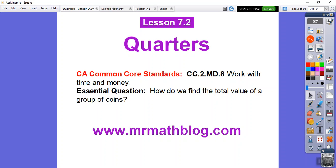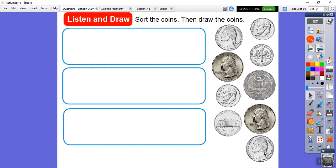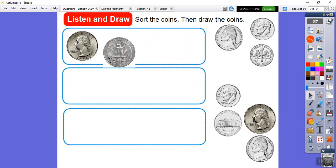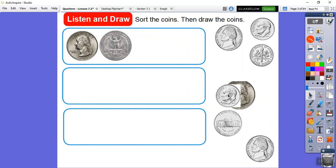Our question here is, how do we find the total value of a group of coins? So here we have a group of coins over here. It says first sort the coins, and then we're going to draw the coins. I see the quarters are these bigger ones. Here's a quarter, here's a quarter, here's a quarter, and they're 25 cents. I'm going to put all the quarters up in this one right here. Let me just slide that over. Grab that quarter. That's the tail side of a quarter right here. And then we'll slide that guy right up there.